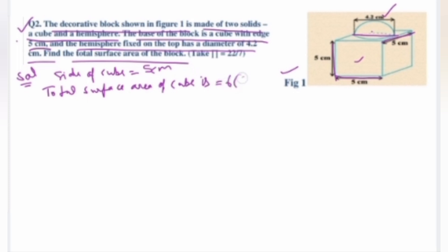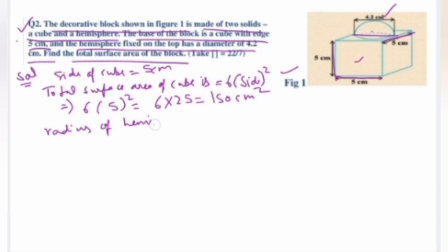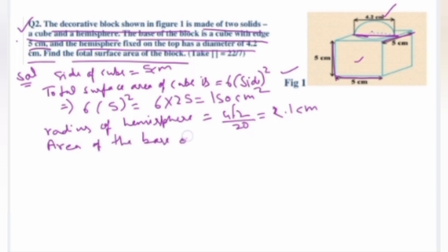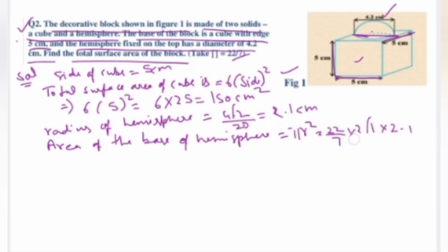Total surface area of the cube = 6 × side² = 6 × 5² = 6 × 25 = 150 cm². Radius of hemisphere = diameter / 2 = 4.2 / 2 = 2.1 cm. Area of base of hemisphere (circular) = πr² = (22/7) × 2.1 × 2.1 = 13.86 cm².